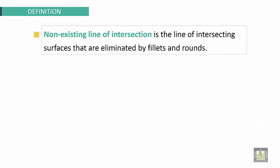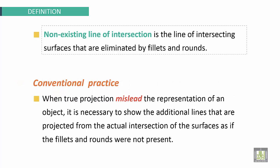Non-Existing Line of Intersection is the line of intersecting surfaces that are eliminated by fillets and rounds. Conventional Practice: When true projection misleads the representation of an object, it is necessary to show the additional lines that are projected from the actual intersection of the surfaces as if the fillets and rounds were not present.